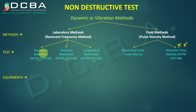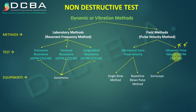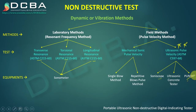The equipment used for the resonant frequency tests is the sonometer. For mechanical or sonic pulse velocity, either a single blow method or a repetitive blow pulse method is used to induce short vibrations. For ultrasonic pulse velocity, a soniscope or an ultrasonic concrete tester is used — commonly known as PUNDIT, which stands for Portable Ultrasonic Non-Destructive Digital Indicator Tester. It is portable and can be carried to the site.